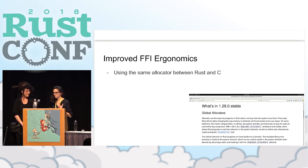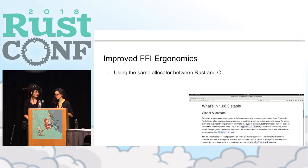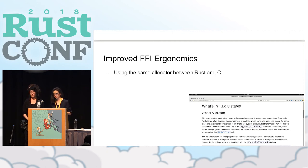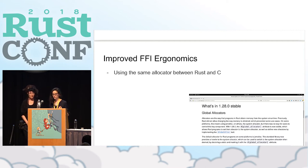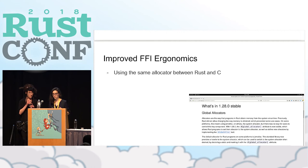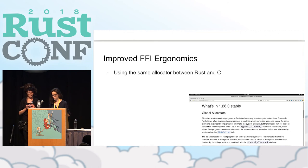Rust is a really great language and we really like it, especially for the safety it provides. When using Rust across an FFI boundary, that's where there's a lot of complexity and things we found challenging. One thing we're excited to see in the recent release of Rust is the ability to use a global allocator. Before this, we were managing memory on both sides of the language boundary, and we had a lot of discussions about when do you allocate on C and free on Rust and how to do this safely. We're really glad to see this feature being released.